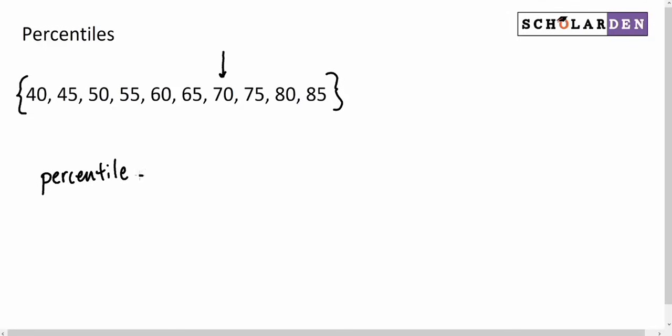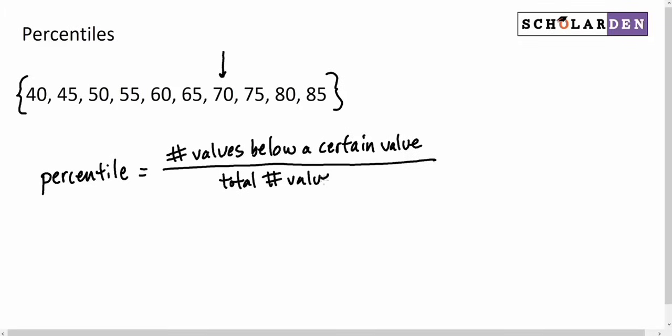Percentile is the number of values below a certain value over the total number of values. Now, that's the fraction it would be in, but then we have to multiply it by 100, or that's the decimal, in order to get the percentage.